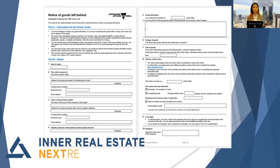There are a few options for delivery methods of the notice: registered post, prepaid post, or electronic email. The 14 days start from the date that the rental provider first informs the renter of the goods left behind. If the renter responds within the 14 days and advises that they require an extension to reclaim the goods, they will need to apply to VCAT for the extension and for VCAT to approve that.